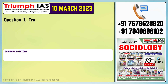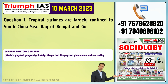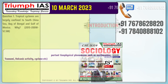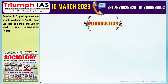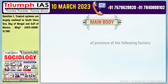Question number 1. Tropical cyclones are largely confined to South China Sea, Bay of Bengal and Gulf of Mexico. Why? The South China Sea, Bay of Bengal and Gulf of Mexico are tropical cyclone-prone areas.